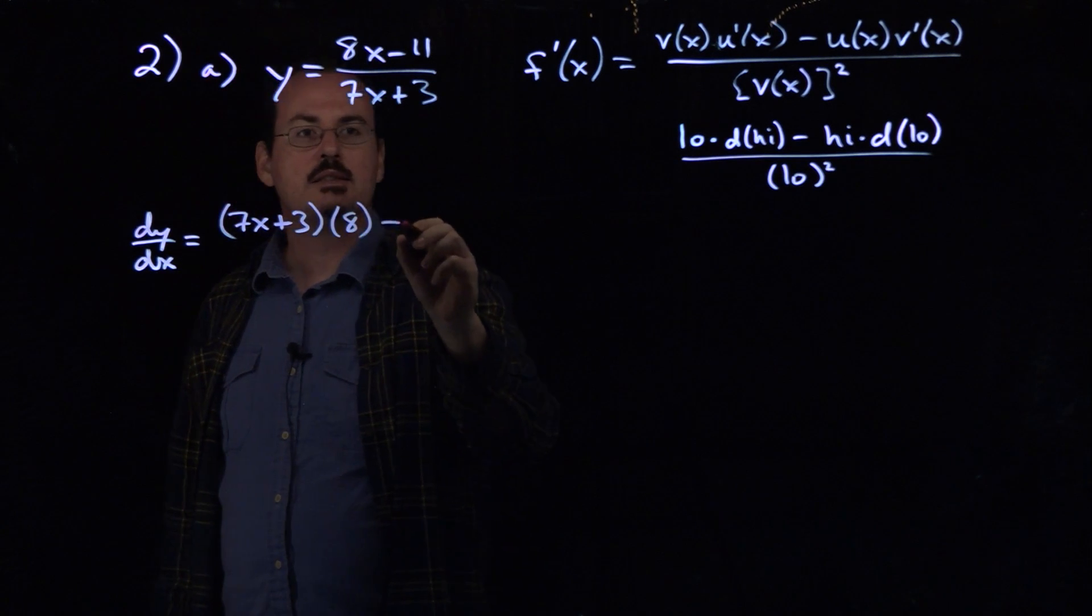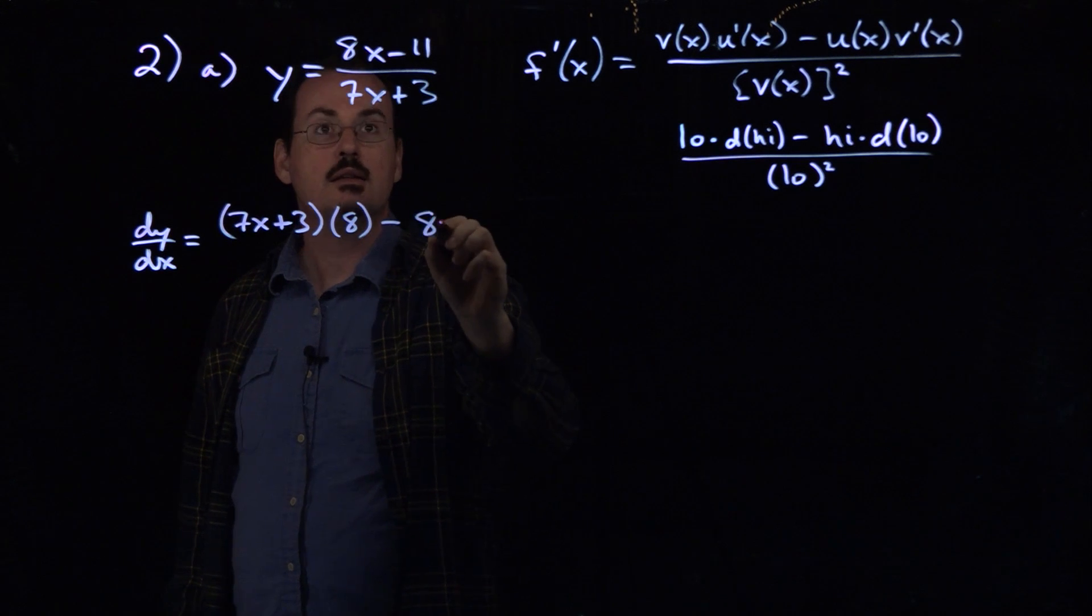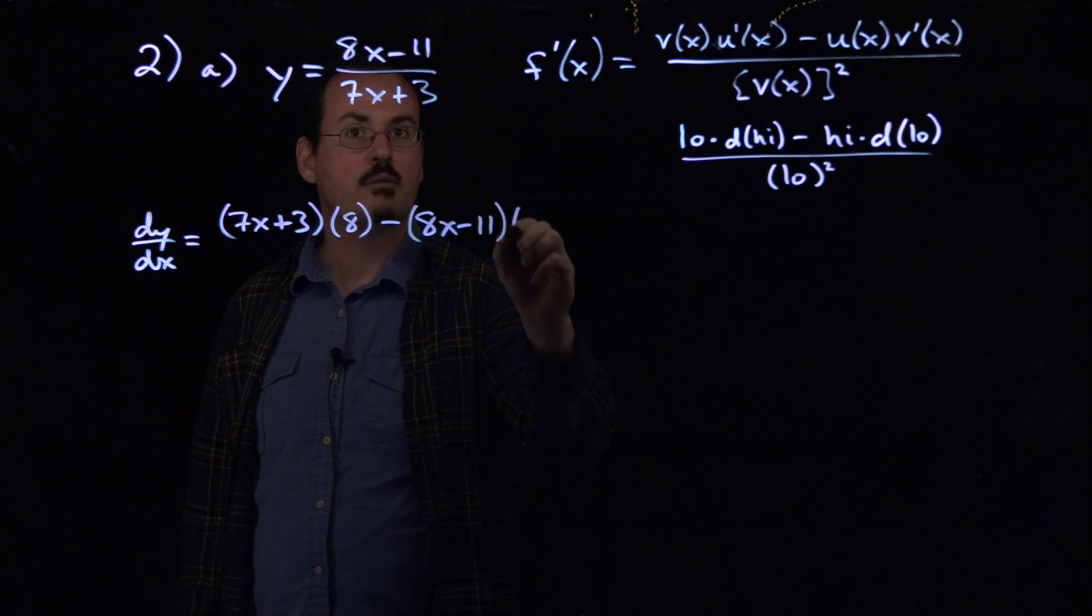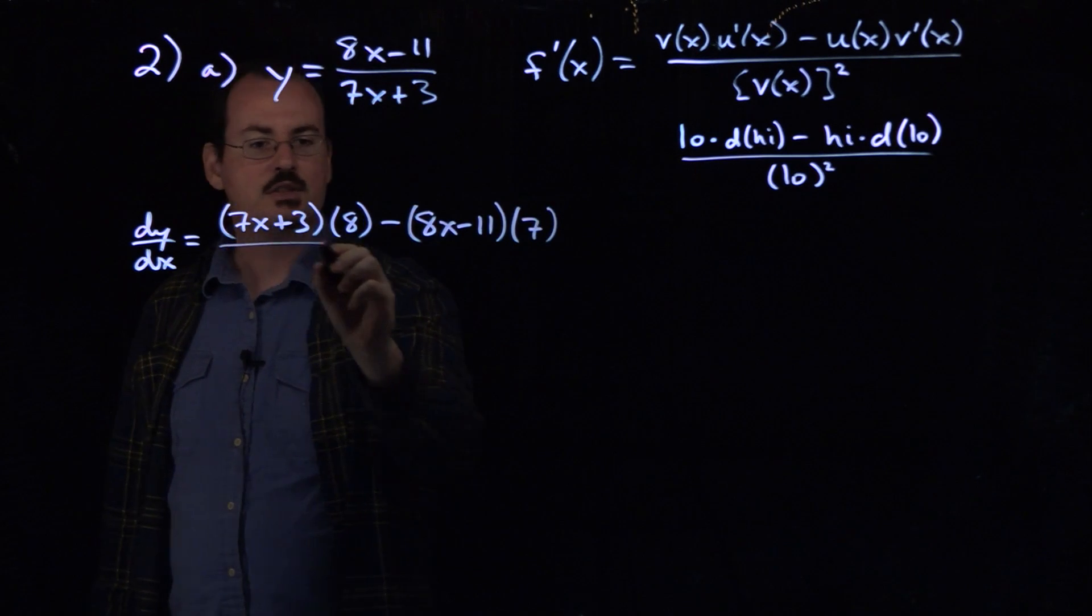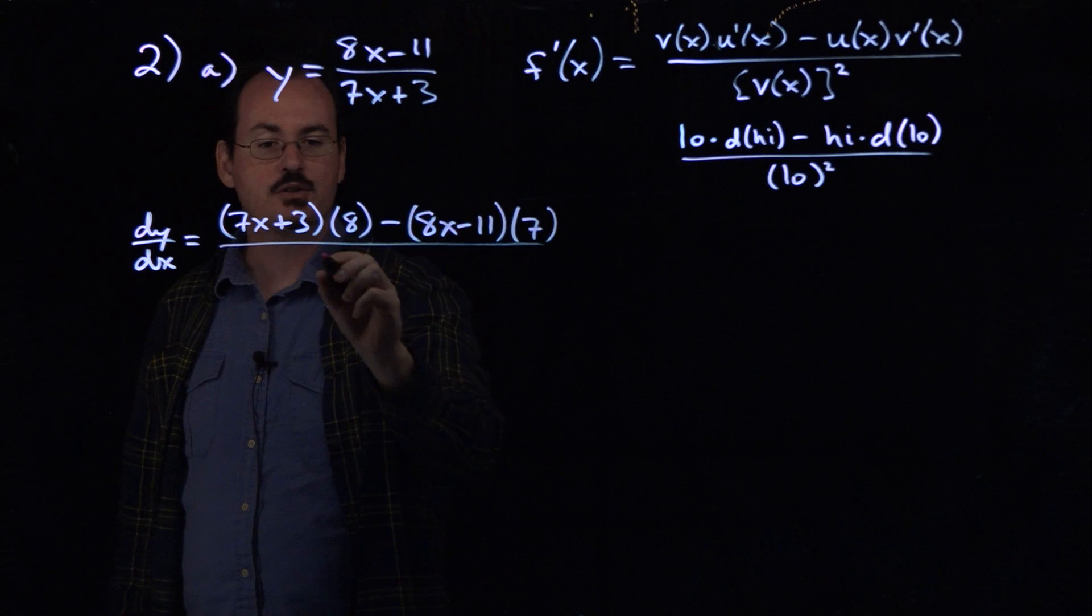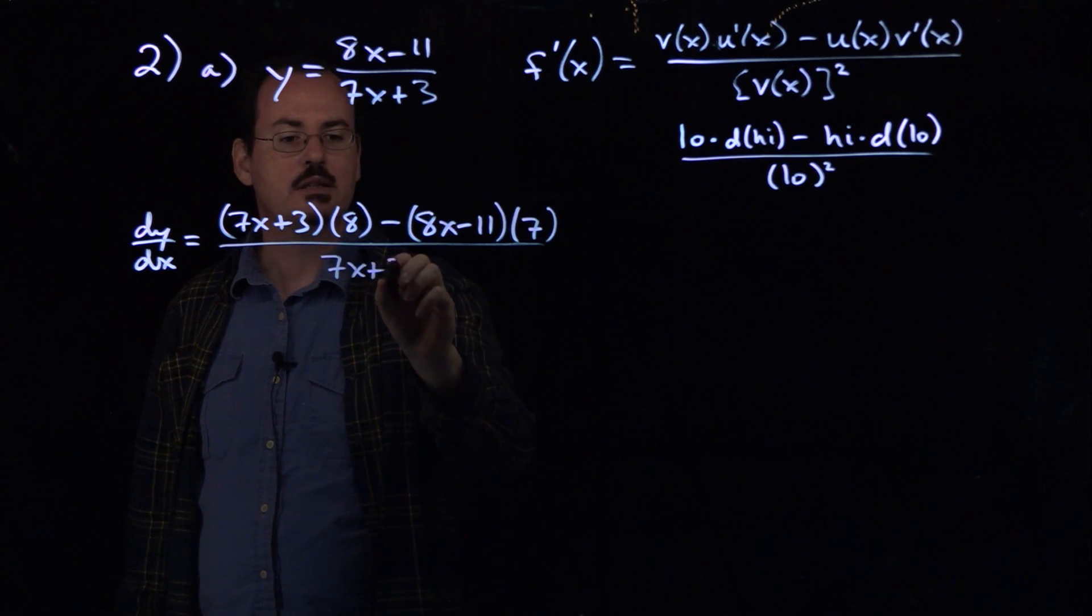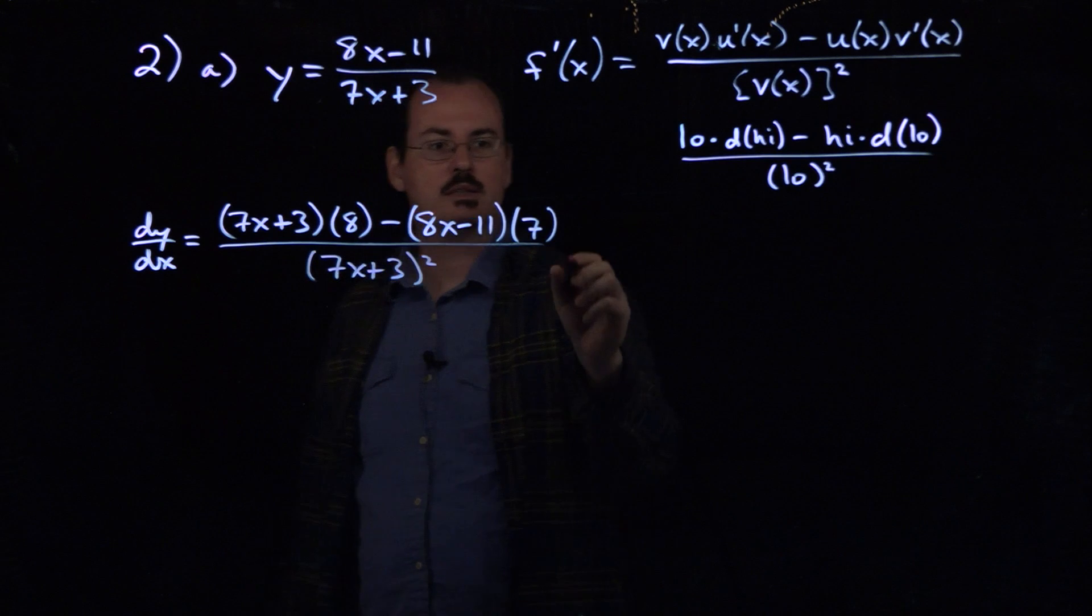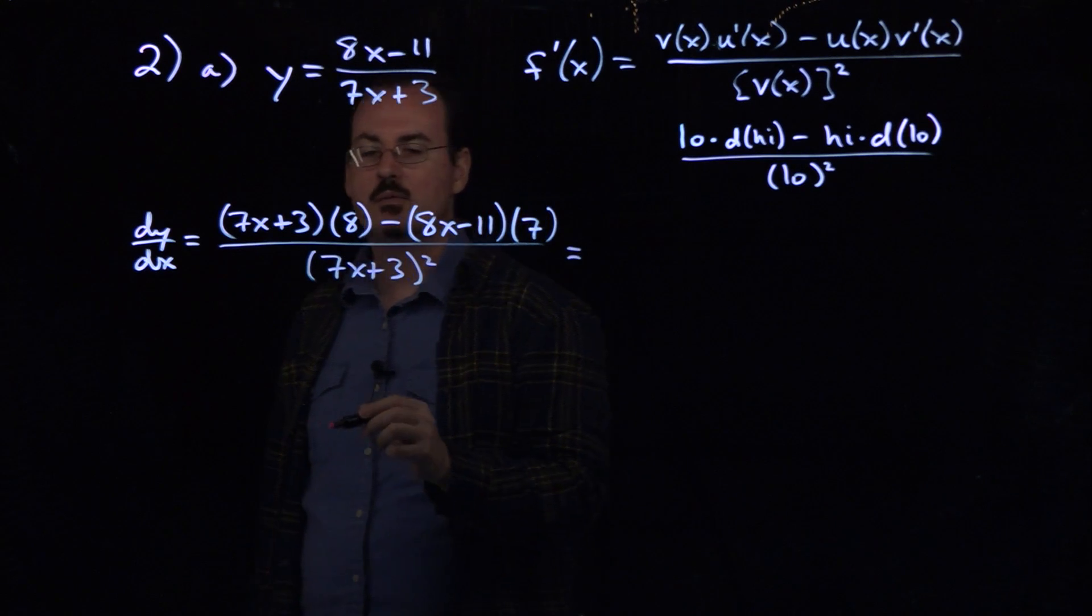Minus the top function, that's high, 8x minus 11, d low, and the derivative of the bottom function, 7. All of this divided by the bottom function squared, so 7x plus 3 squared.